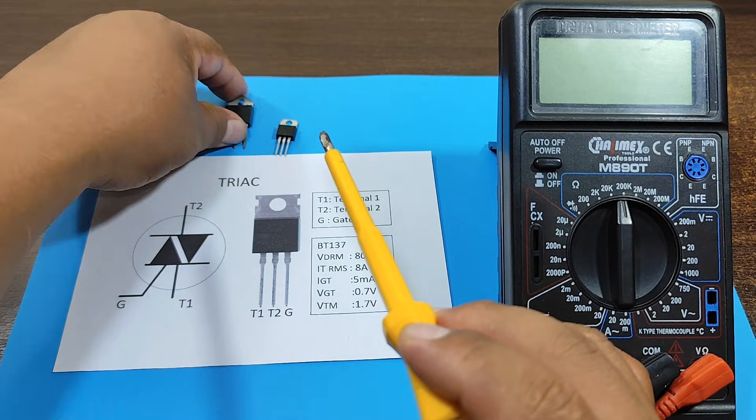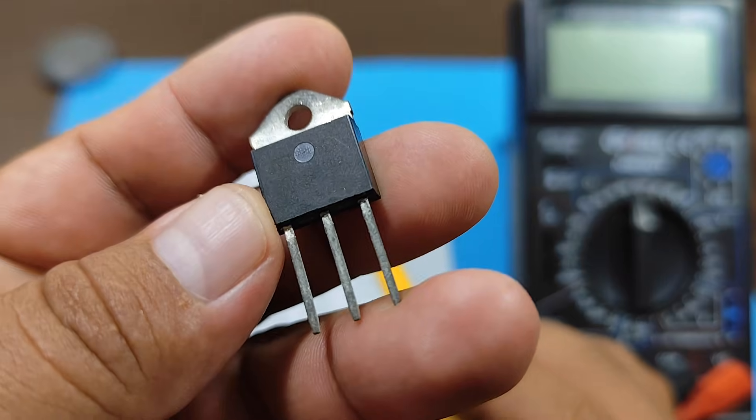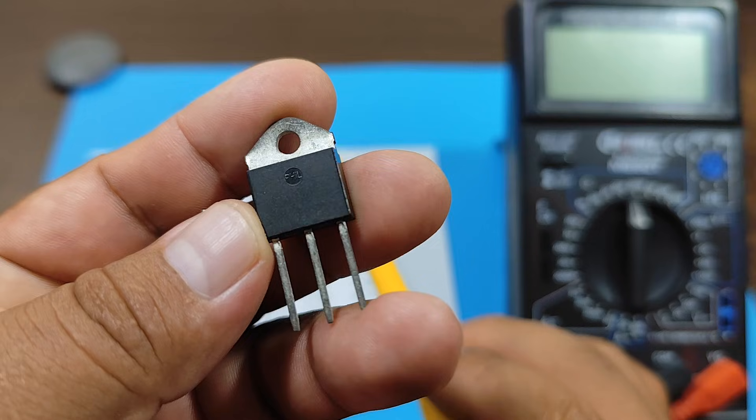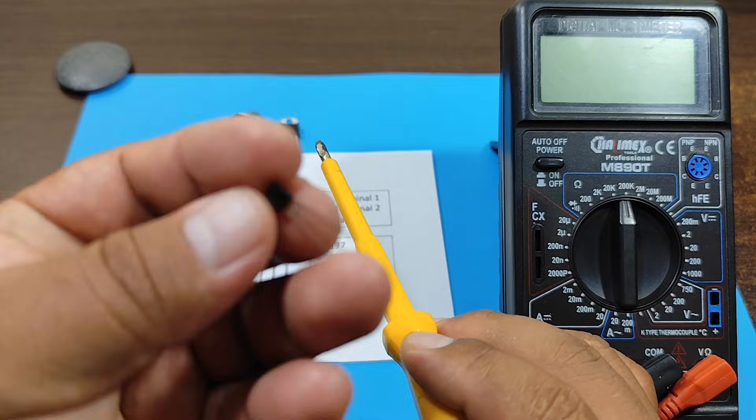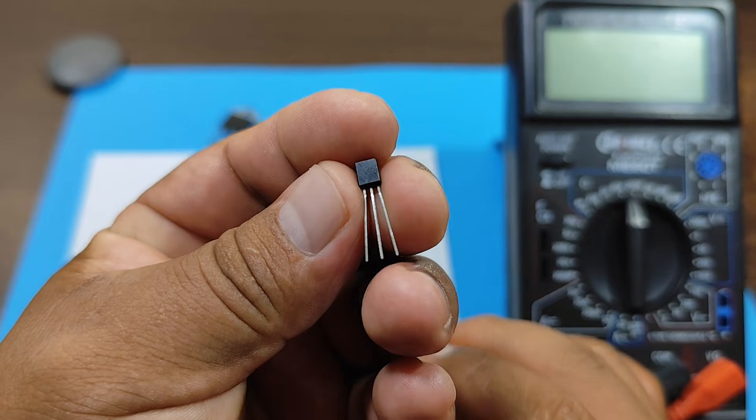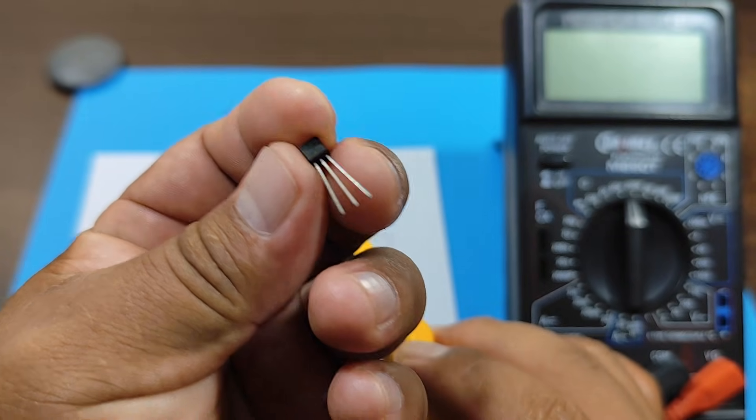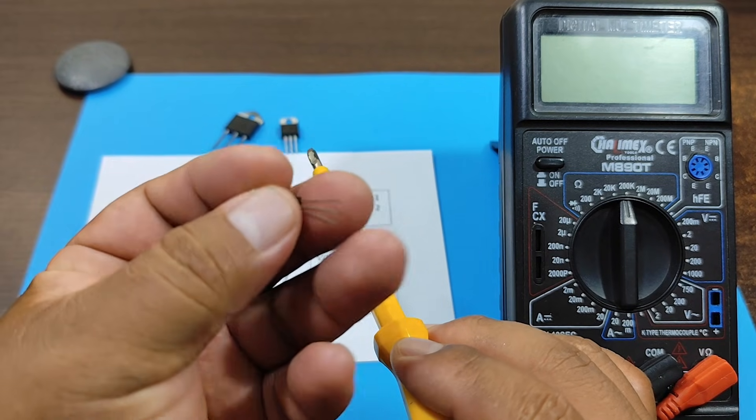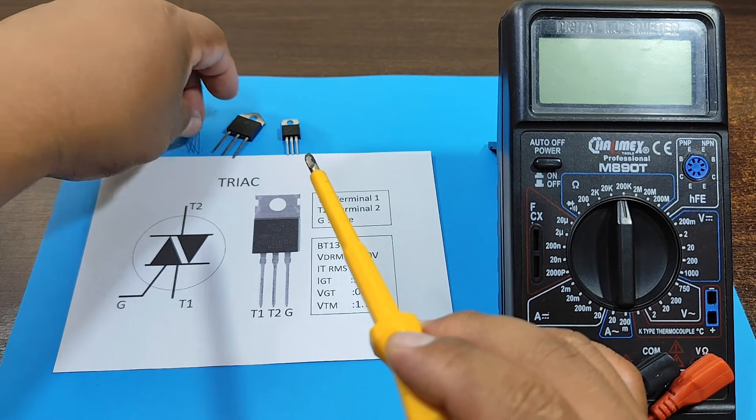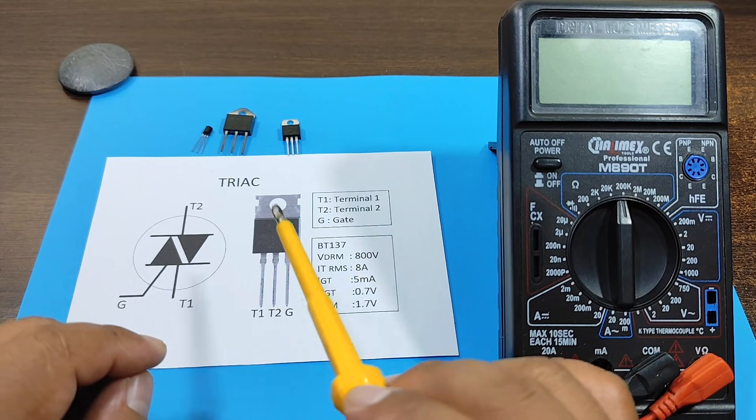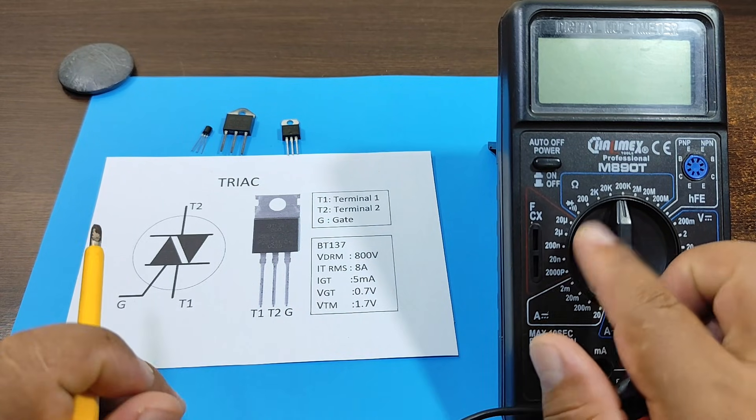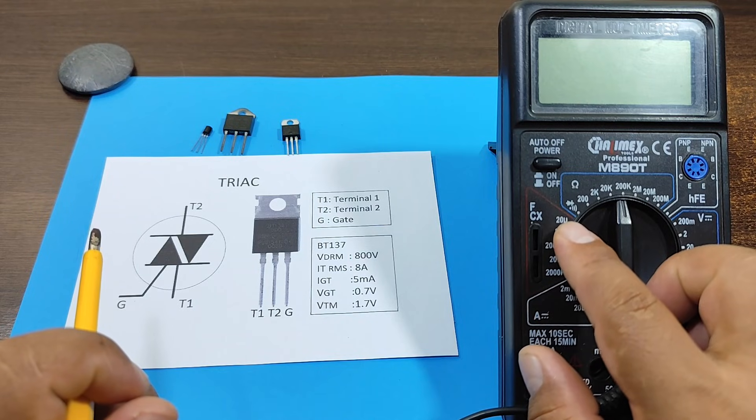However, you may find them in different sizes, depending on the current being handled. You may find it in quite small sizes, as is the case with this encapsulation. Now, regarding the measurement, for that we are going to set our multimeter to continuity or diode mode.